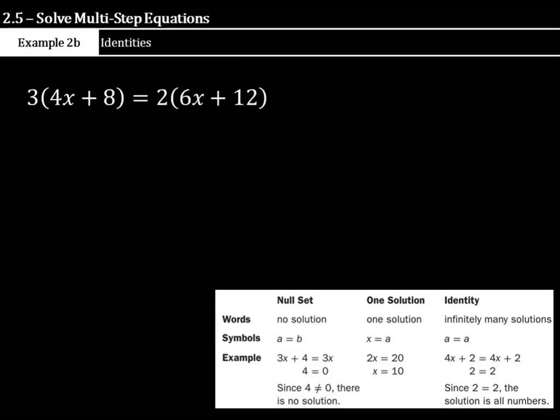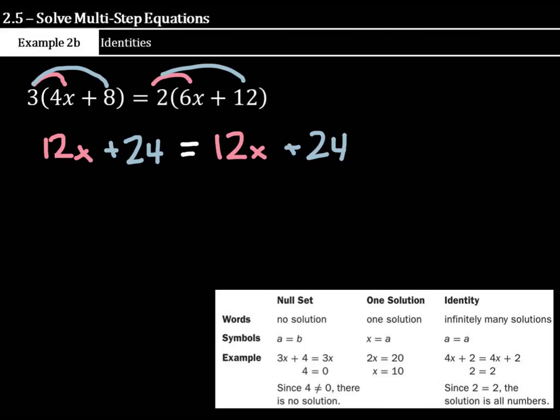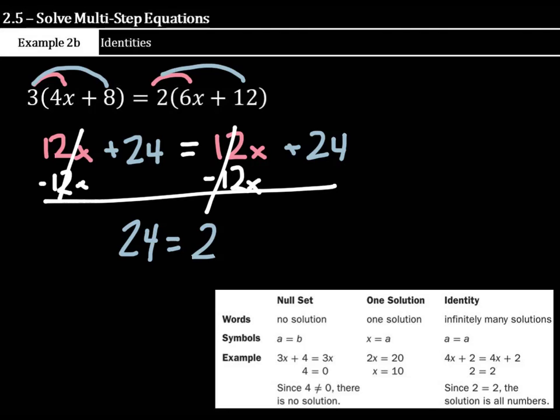Let's move on. In our second example of this type of problem, let's distribute once more. We have 3 times 4x being 12x. And then 3 times 8 being a positive 24. And that's going to equal 2 times 6x is 12x. And 2 times 12 is plus 24. Well, right away, 12x plus 24 equals 12x plus 24 is an example of that identity down there. Now, could you subtract 12x from both sides again? To get 24 equals 24 just to prove it? I would.